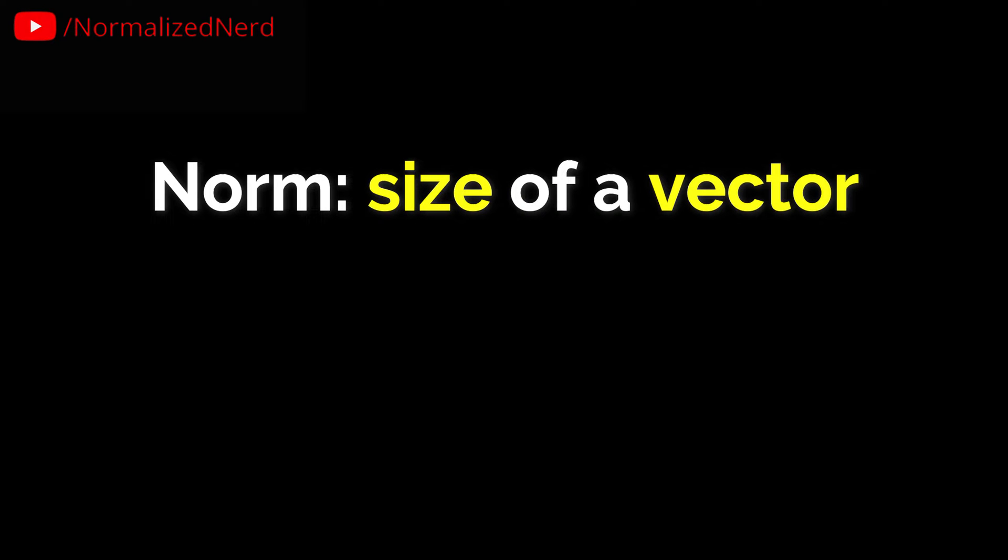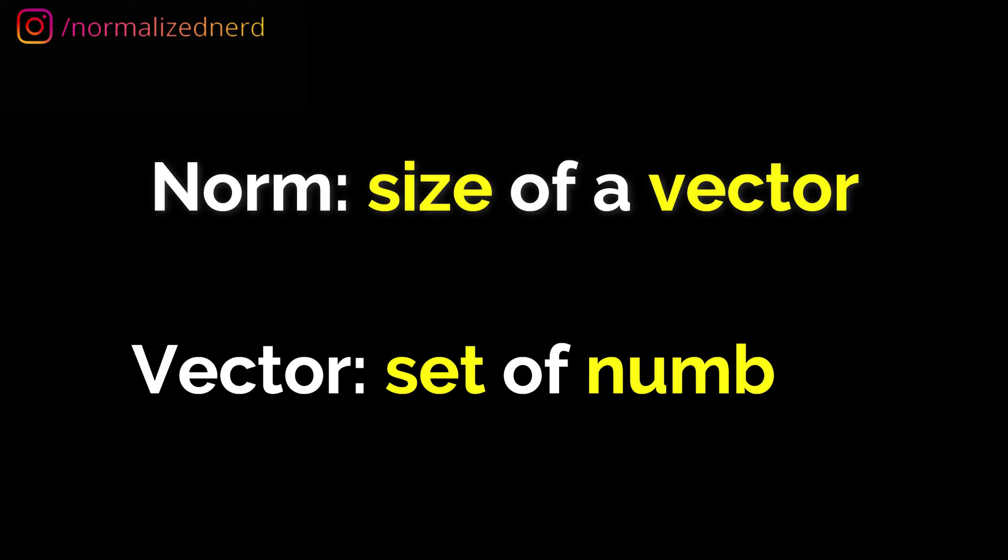In simple words, the norm is a quantity that describes the size of a vector. Now please remember that when I say vectors, I don't mean the vector quantities that we study in physics, rather something that we can represent using a set of numbers.